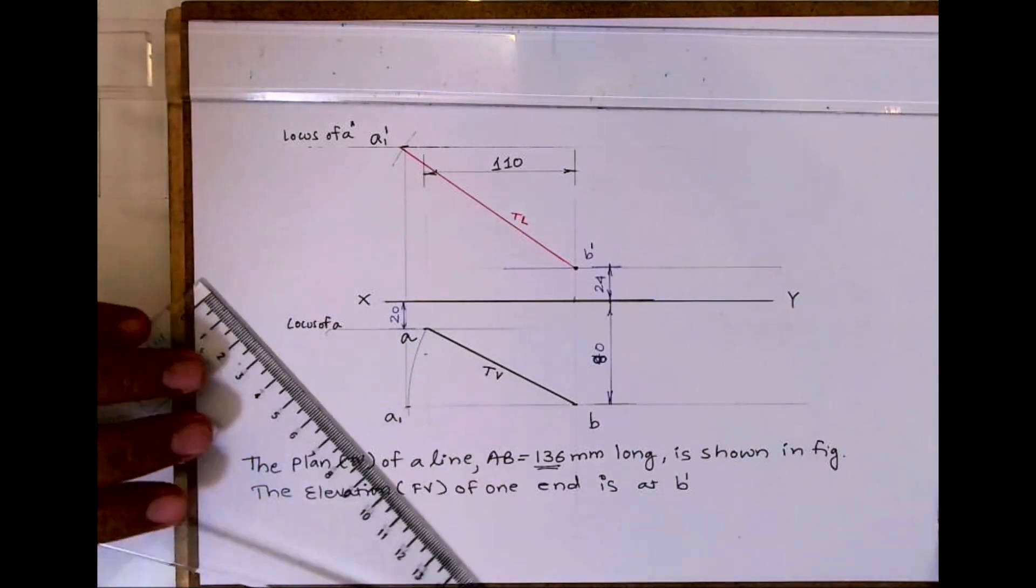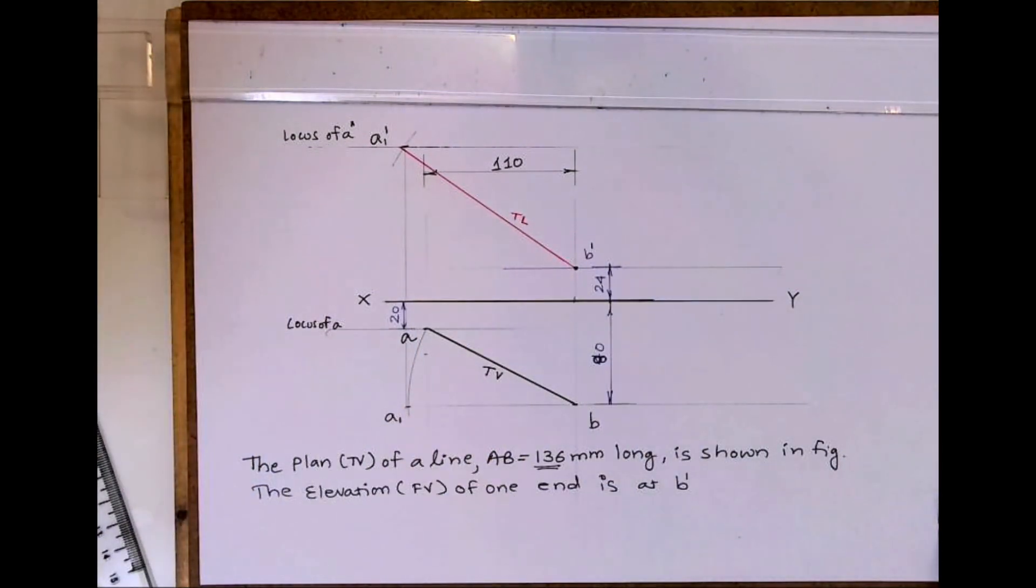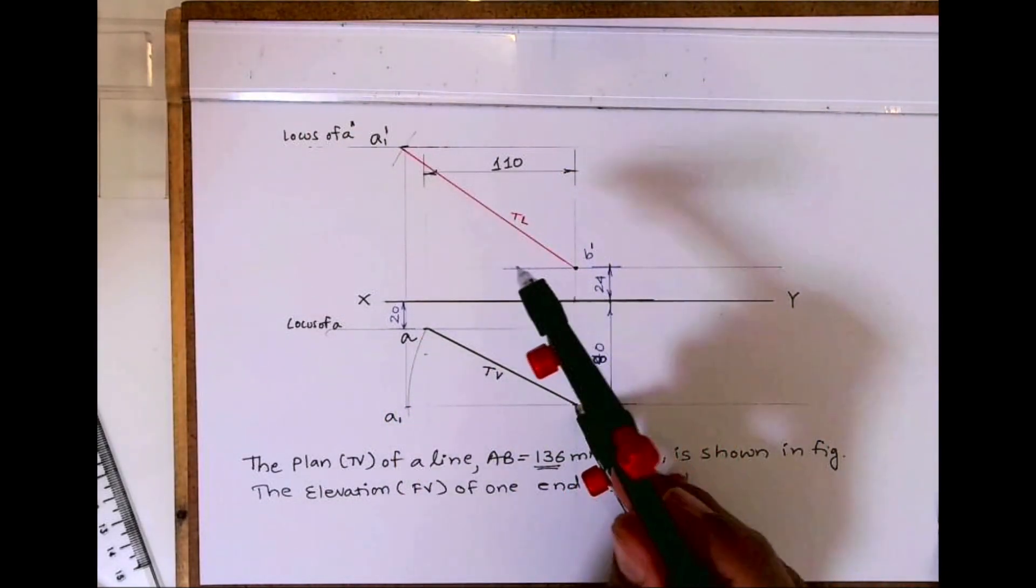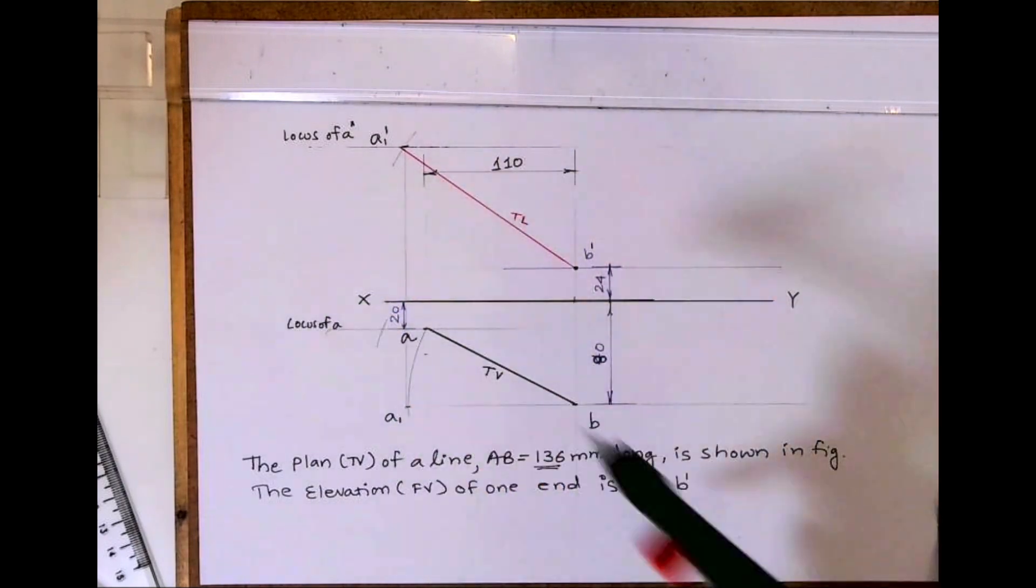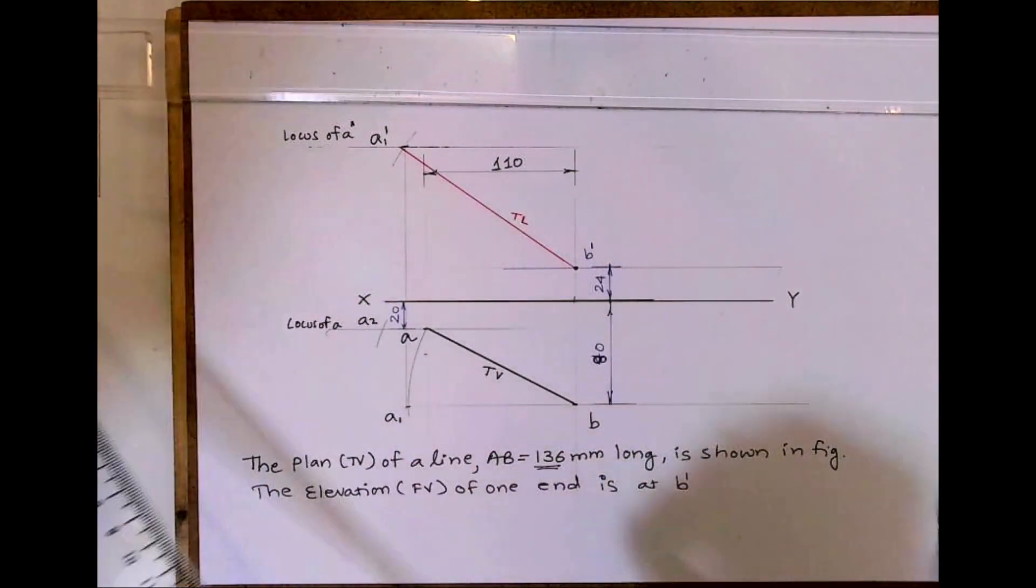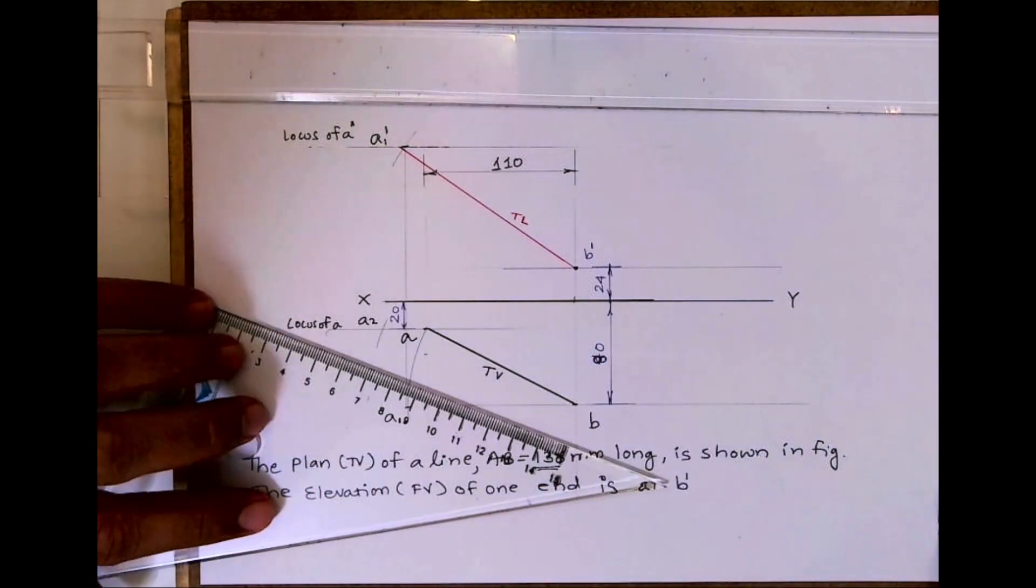After drawing true length, now see, DB is already given as 110, remember that. You take that true length and you cut from here, from B, so you'll get A2. So this is also true length.